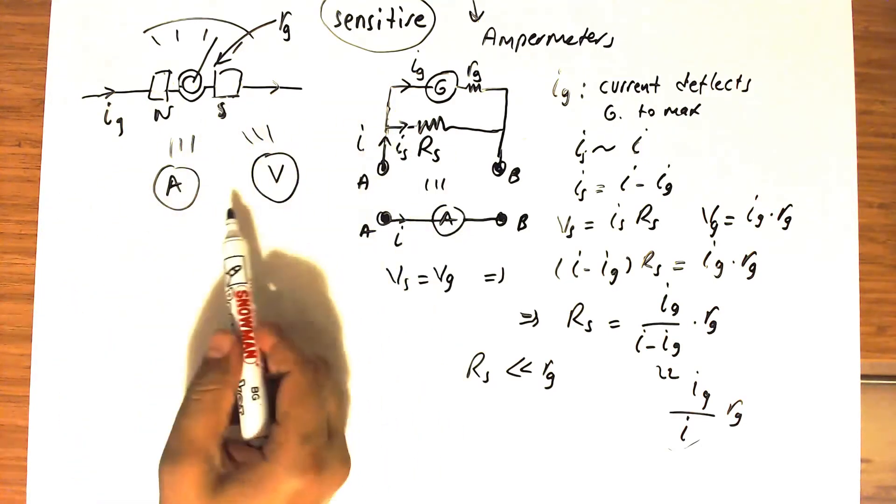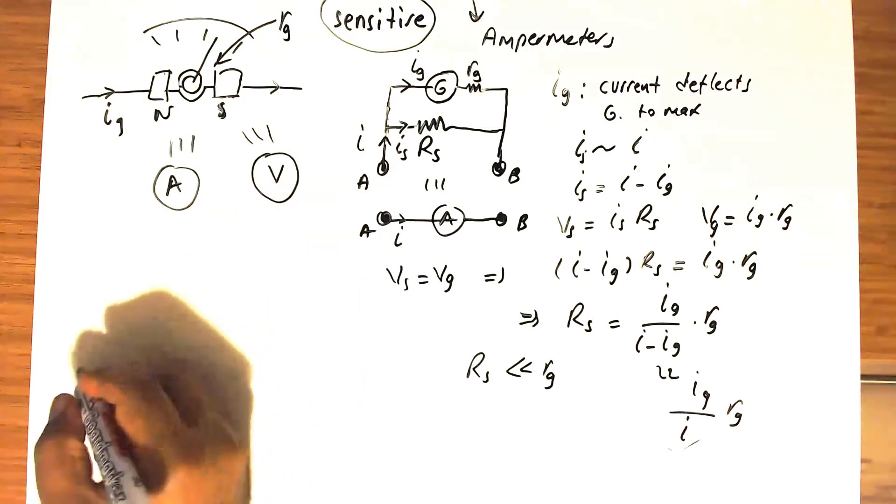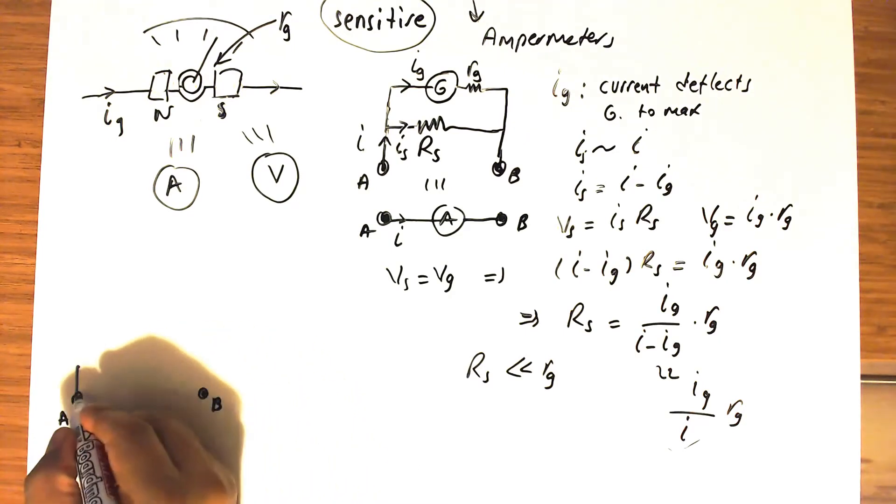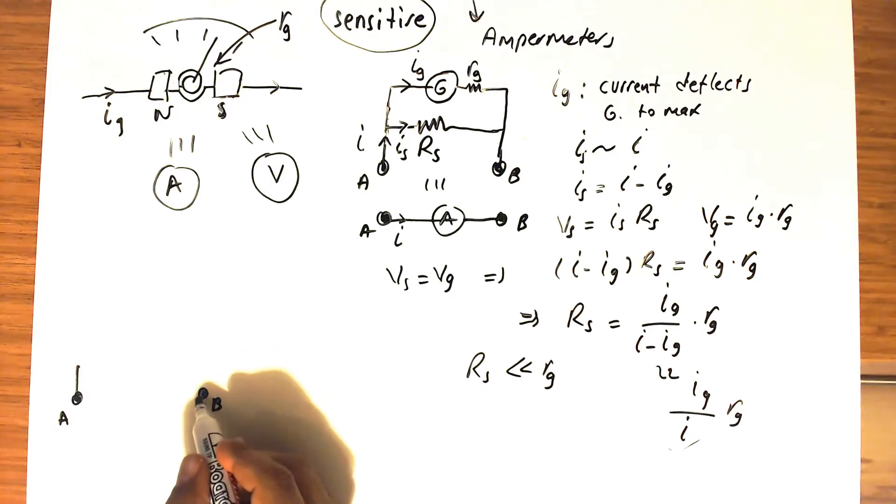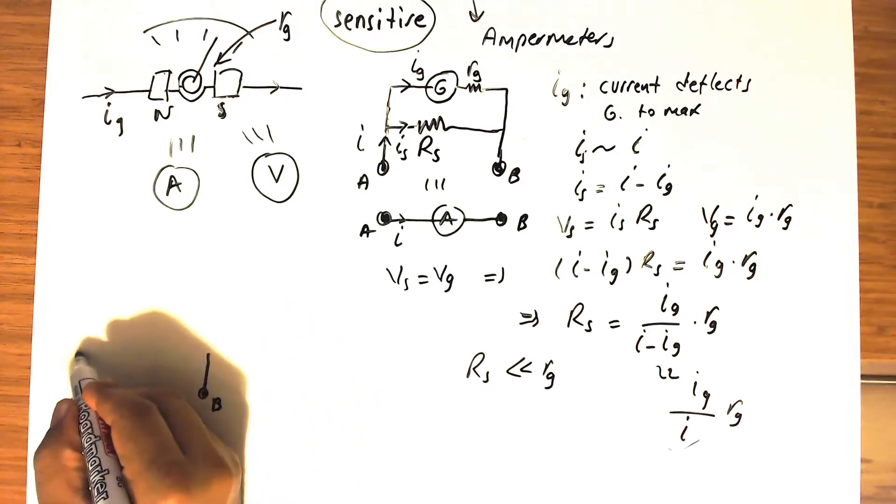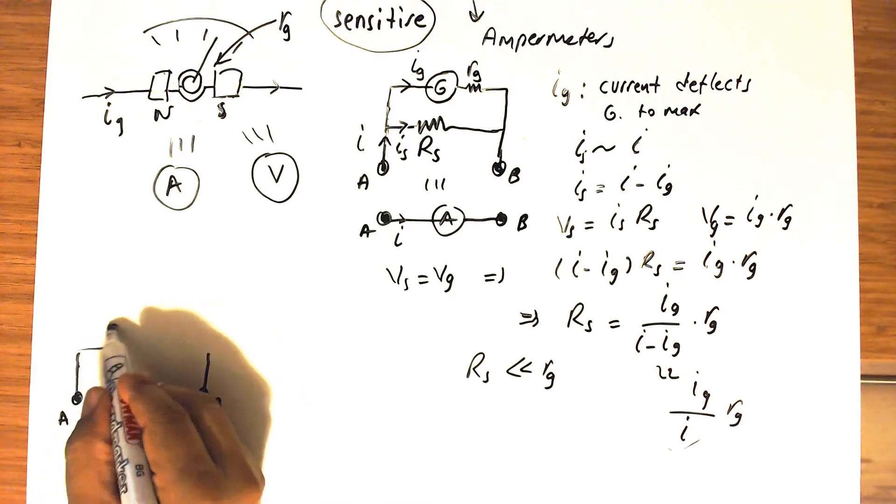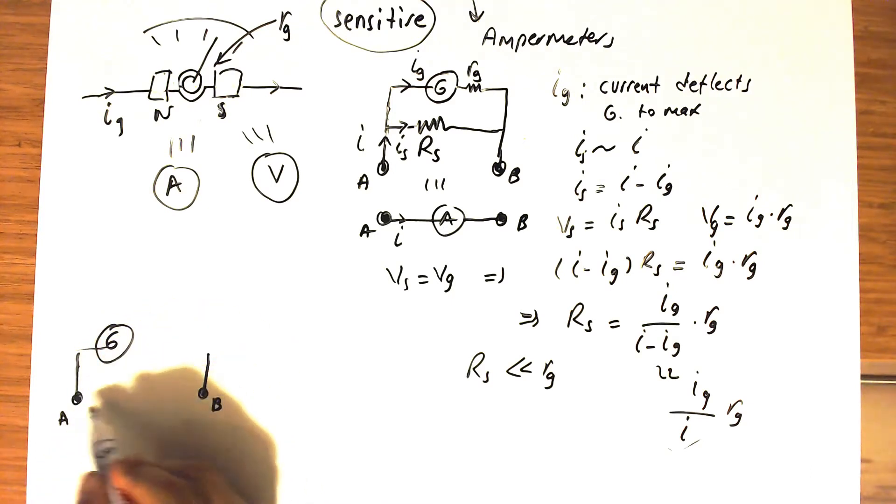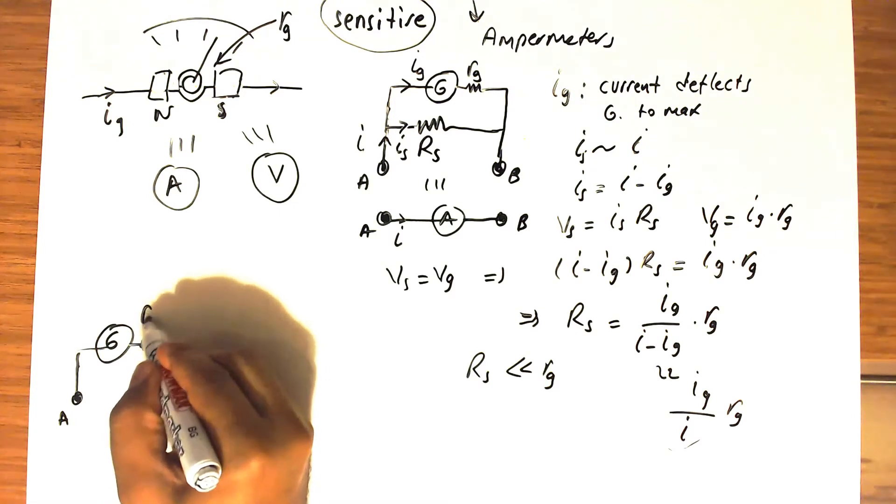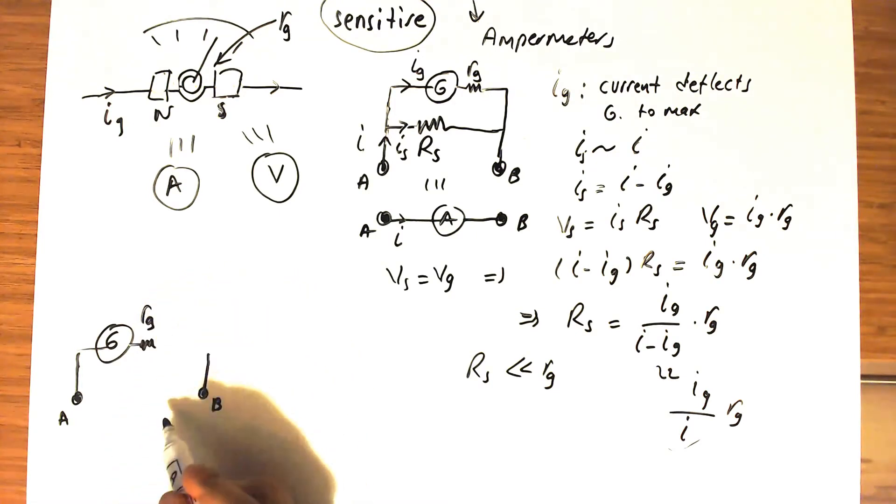Using the galvanometer as a voltmeter is relatively simple. Let's first denote these A and B terminals as the voltage to be measured. The galvanometer is connected to these terminals, and we always have the internal resistance of the galvanometer.